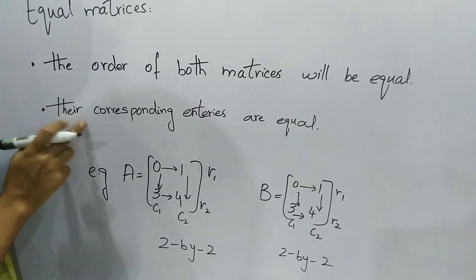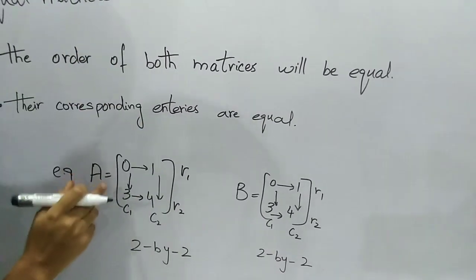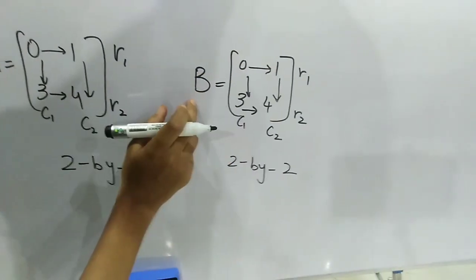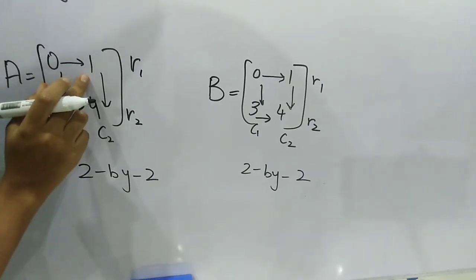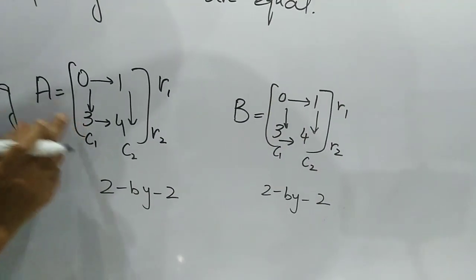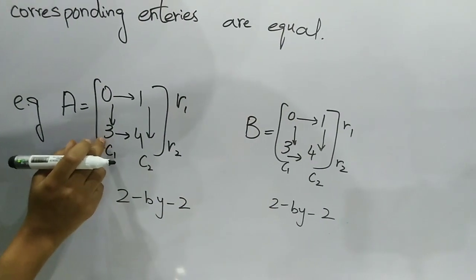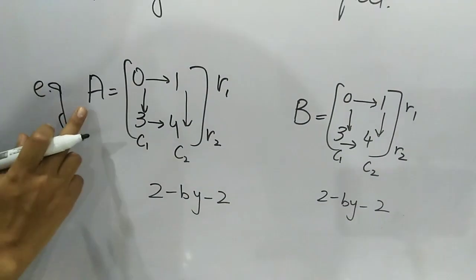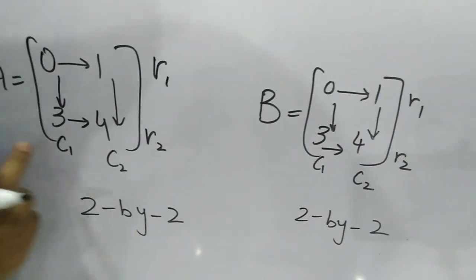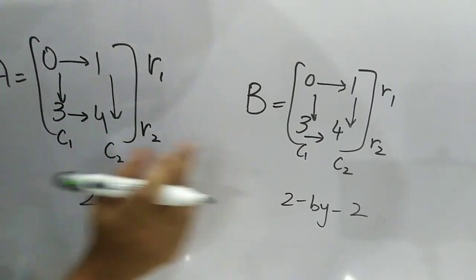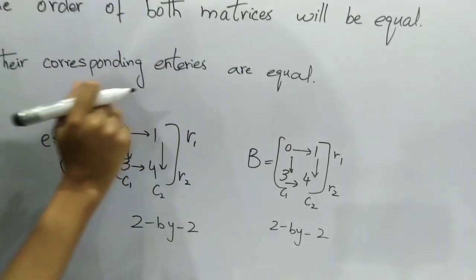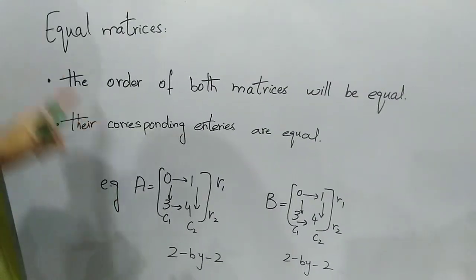Now we check the second condition — their corresponding entries. In matrix A, the first entry is 0, and in matrix B the first entry is also 0. The second entry in A is 1, and in B it is also 1. The third entry in A is 3, and the fourth entry in A is 4 — matrix B also has entry 4. The second condition is also fulfilled, so both matrices are equal matrices.